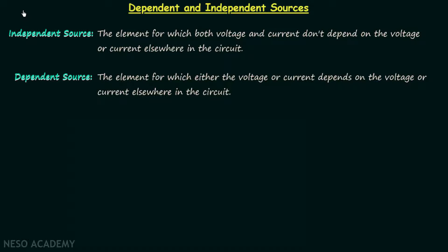Till now we have completed three basic circuit elements — resistor, inductor, and capacitor. Now we are going to have a discussion on the fourth basic circuit element known as source. In this lecture we will discuss dependent and independent sources.